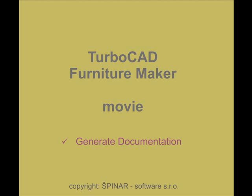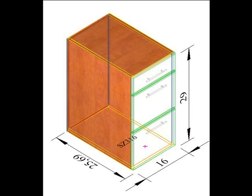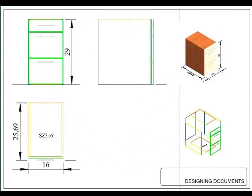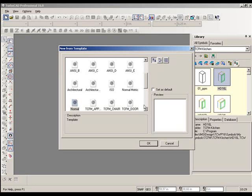Under Project Documentation, a drawing in which basic 2D and 3D views of a cabinet are generated — and which includes the breakdown to individual parts and basic dimensioning — is understood.